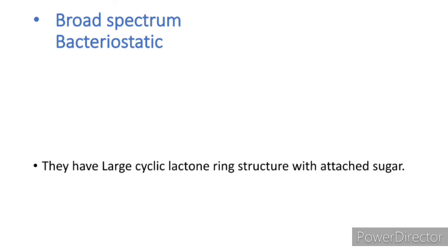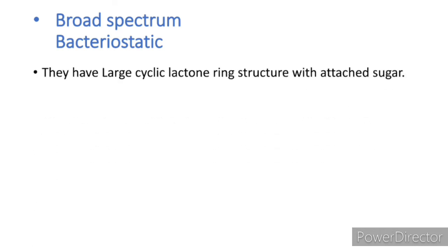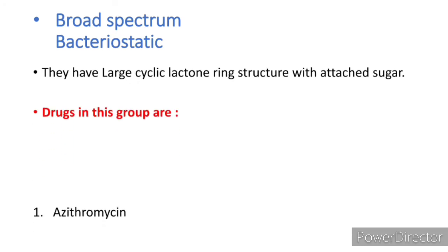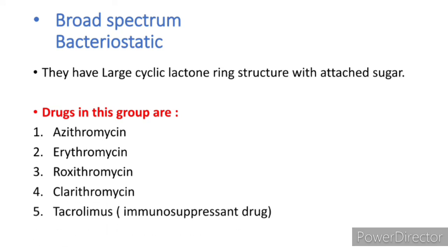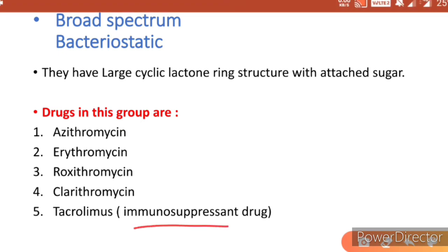Macrolides are bacteriostatic. They have a large cyclic lactone ring structure with attached sugars. Drugs in this group are azithromycin, erythromycin, roxithromycin, and clarithromycin. The fifth one is tacrolimus, which is an immunosuppressant drug — yet it is a macrolide. The rest four are antibacterials.